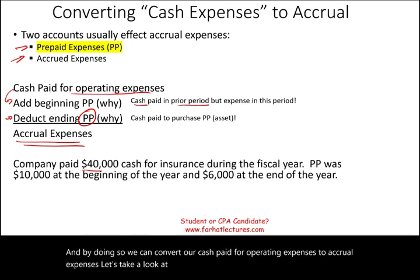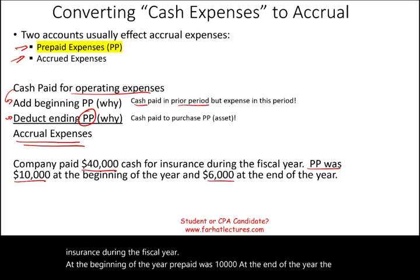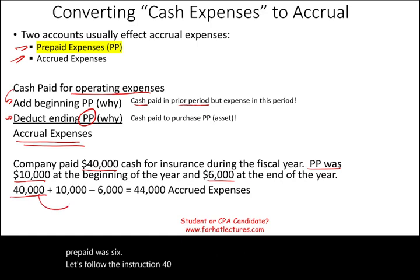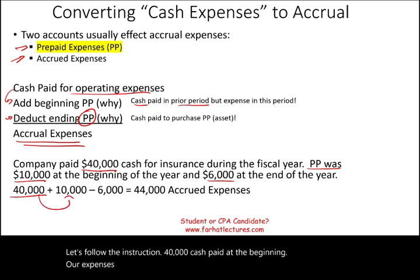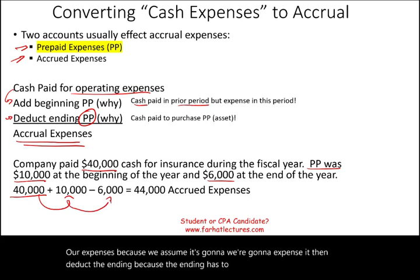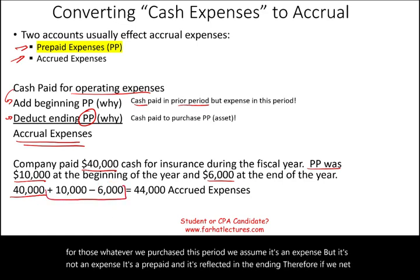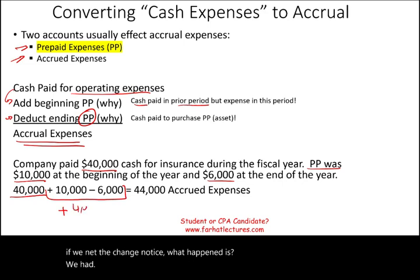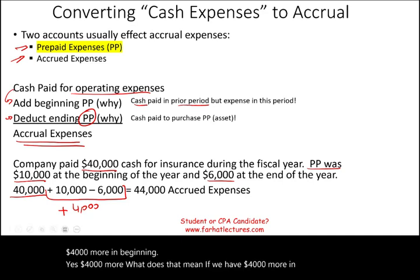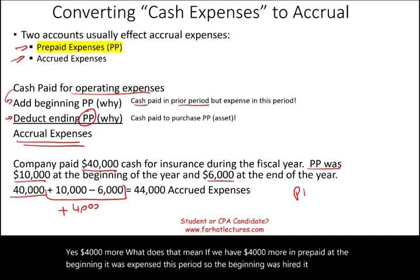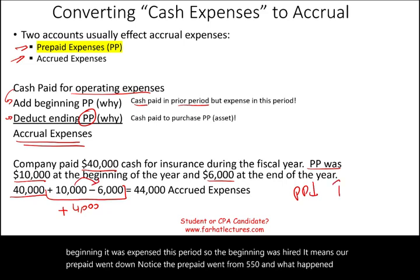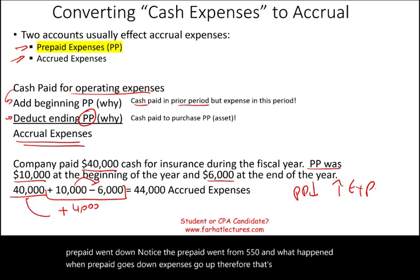Let's look at an example. The company paid $40,000 cash for insurance during the fiscal year. At the beginning of the year, prepaid was $10,000; at the end of the year, prepaid was $6,000. Following the formula: $40,000 cash paid, add beginning prepaid, deduct ending prepaid — accrual expenses equal $44,000. The prepaid went from $10,000 to $6,000, so it went down by $4,000. When prepaid goes down, expenses go up. That's why the cash paid plus the $4,000 difference gives us $44,000.